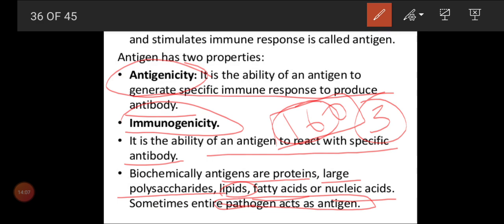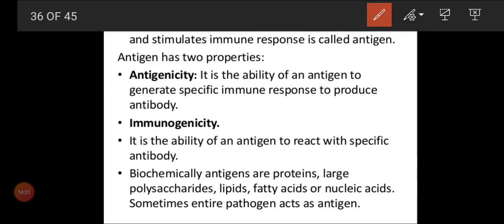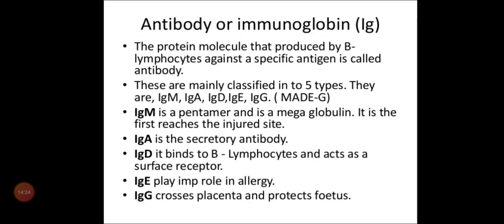So, what are the two properties of antigen? The antigen should have the capacity to produce antibodies in your body — that is antigenicity — and the antigen should react with the antibody — that is immunogenicity. I think now you have a good idea regarding antigen, and also B lymphocytes and T lymphocytes. Please quickly go through your book. In the next video, I will send a detailed account of antibody or immunoglobulin. Thank you, children.